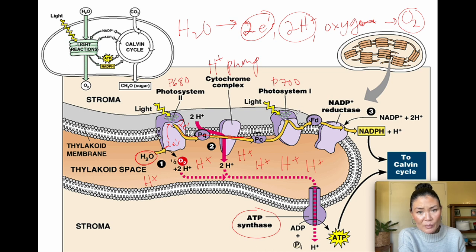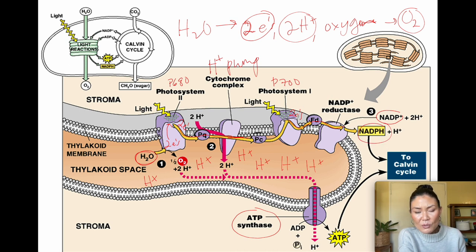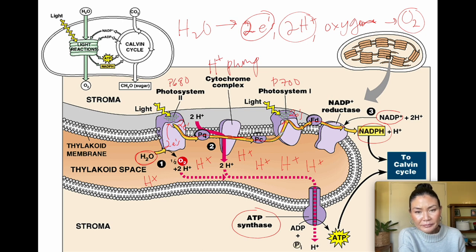The second half of the light reaction involves Photosystem 1 (PS1), which contains a chlorophyll a molecule called P700 — it absorbs 700 nm (red light) best. P700 loses two electrons, which move down a small electron transport chain until those two electrons meet up with NADP+ to make NADPH. The two electrons lost by P700 are replaced by the electrons that originally came from P680.